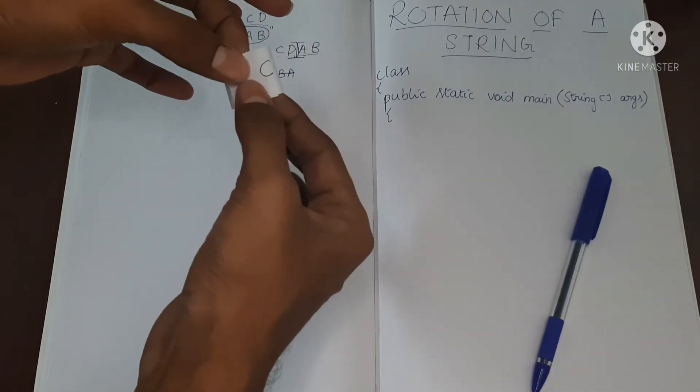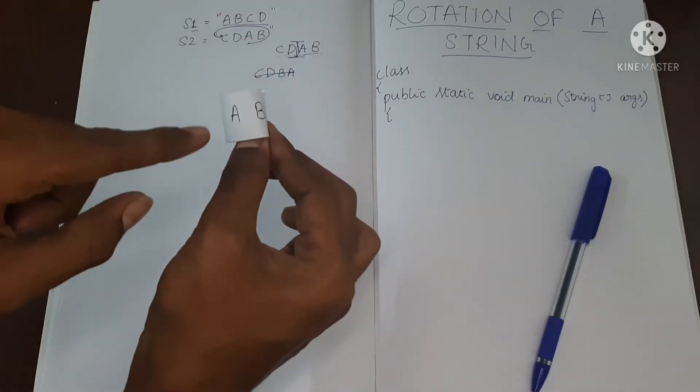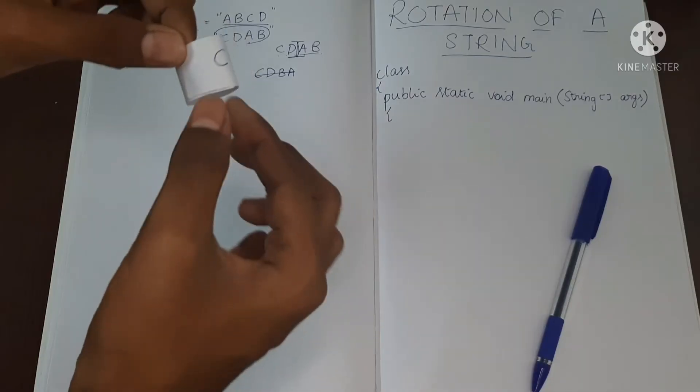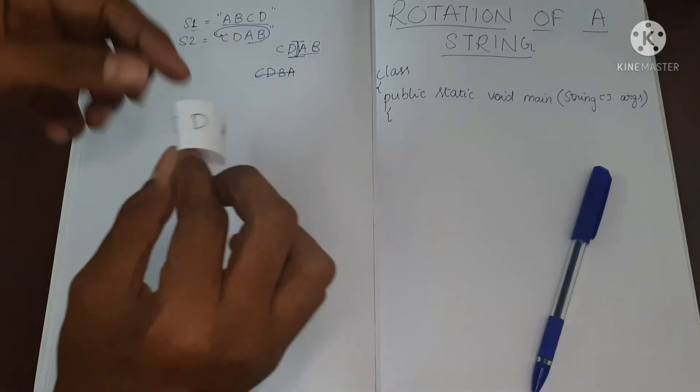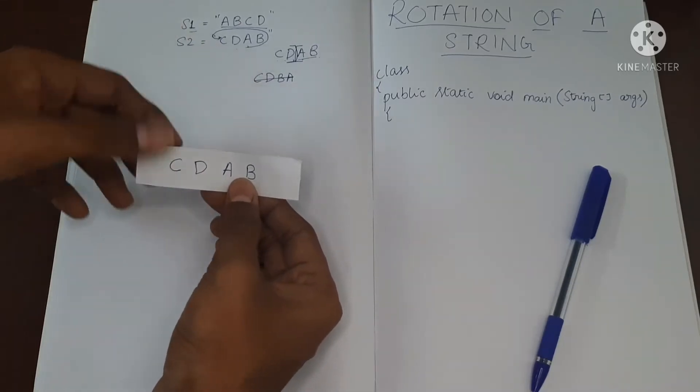So this is the rotated version. So you can see, you can find the first string A, B, C, and D. So the second string S2 is the rotation of S1.